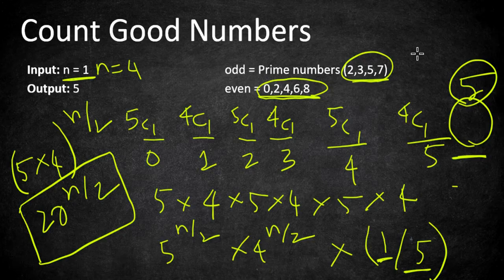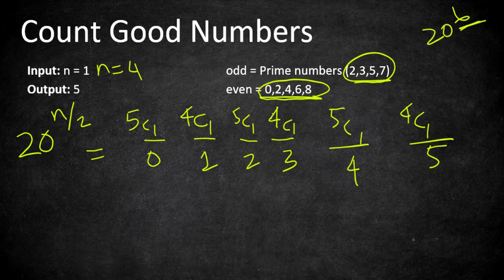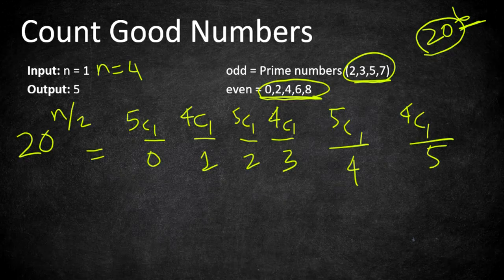What makes this problem medium difficulty is calculating the power. You could use a simple power function, but the values are long. In a normal iterative approach, for 20^6 you would loop 6 times and multiply — but with large inputs this method will definitely cause a time limit exceeded error. We need a faster method to calculate the power.